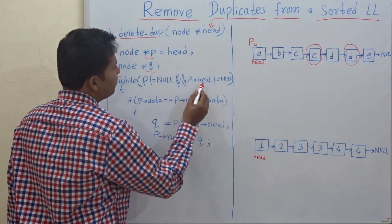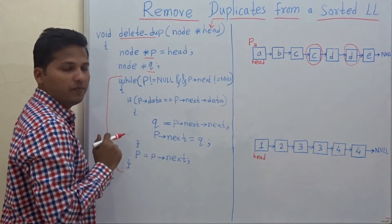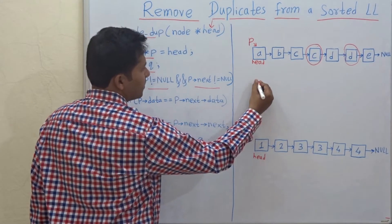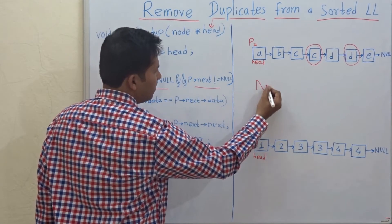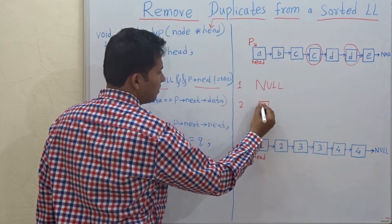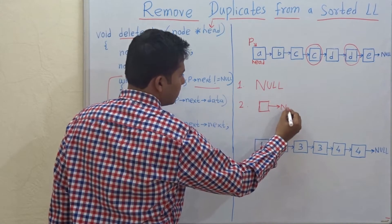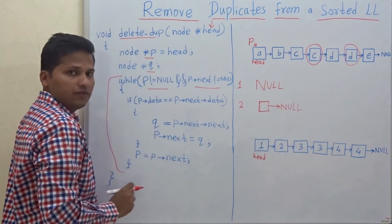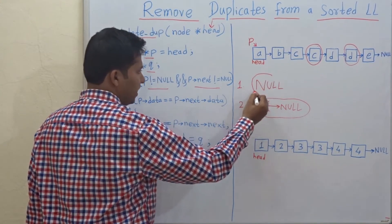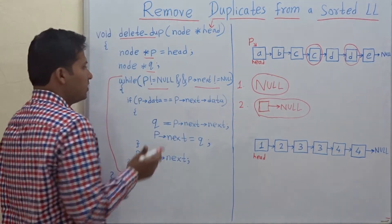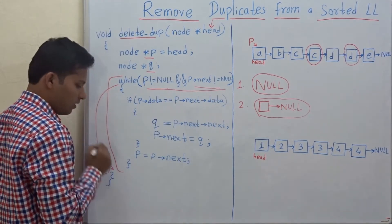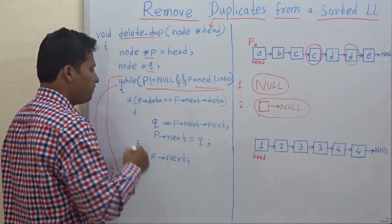While P is not equal to null and P->next is not equal to null. These are two particular cases: if the linked list given to you is null, that is the first case, and the second case is there is only one node in the linked list. If there is only one node, there is no question of duplicates, and if the list is null there will obviously be no duplicates. So in these two cases we come out of the while loop — these are the breaking conditions.